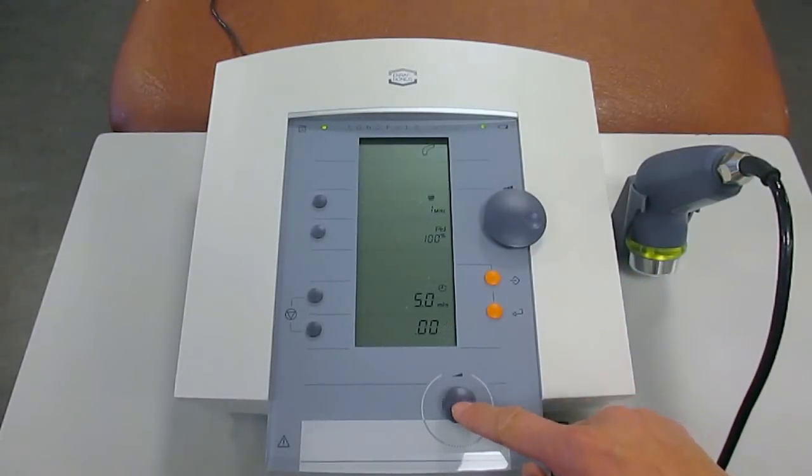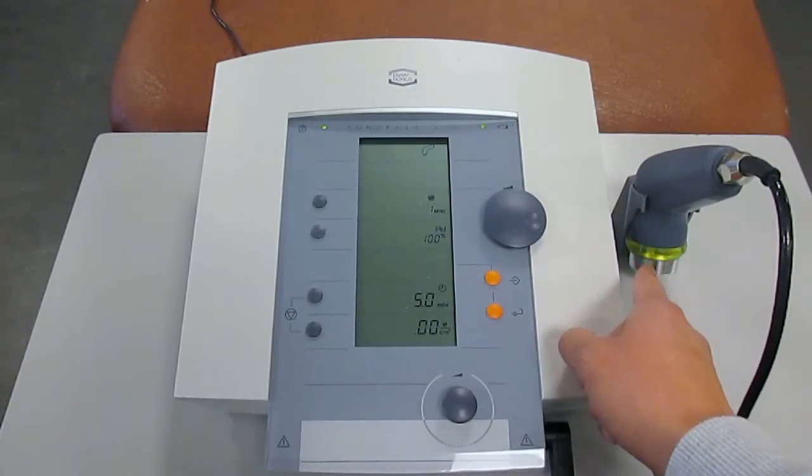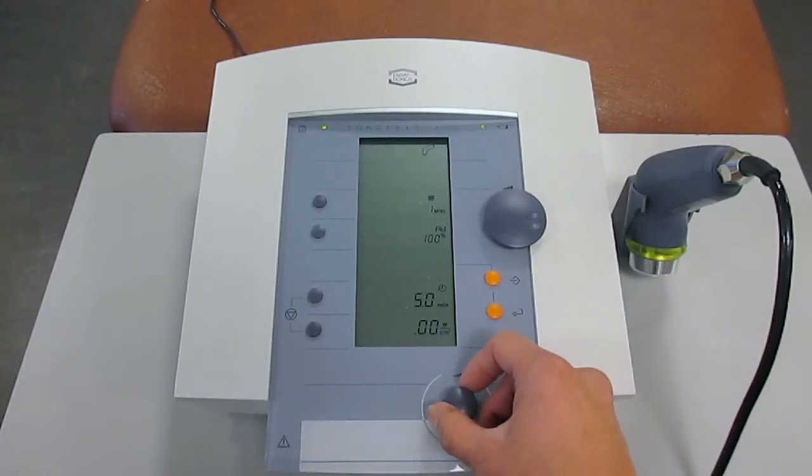This dial located right here increases the ultrasound dosage or the ultrasound intensity. You turn it clockwise to increase and you turn it anti-clockwise to decrease the intensity. Usually what you would do is put the ultrasound head with the ultrasound gel on the soft tissues before you turn on the ultrasound intensity. But for the purposes of demonstration, I can simply just turn it on just for you to see.